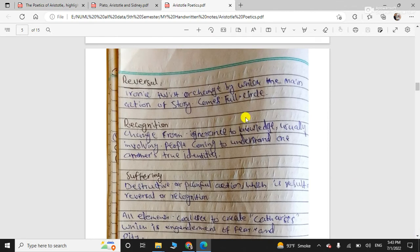So, reversal should be there. What is reversal? It's an ironic twist or the change by which the main action of the story comes full circle. Recognition? Change from the ignorance to knowledge. You know that tragic hero will be there in your tragedy. So, he will recognize, from ignorance to knowledge. So, you have read the tragedy Oedipus Rex by Sophocles. So, it perfectly follows the Aristotelian model of tragedy. So, you can better relate that thing. Like recognition, reversal, all these elements are present in your Oedipus Rex.